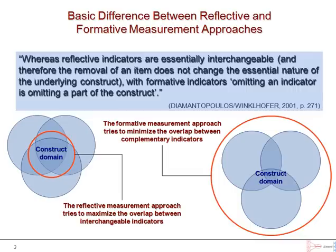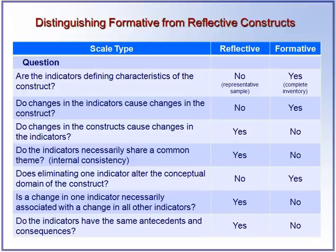In the case of reflective indicators, the indicators are essentially interchangeable, and therefore the removal of an item does not essentially change the nature of the construct. But in the case of formative measures, since it's the indicators that lead to change in the construct, omitting an indicator means omitting a part of the construct, and therefore there will be a significant change in the construct.